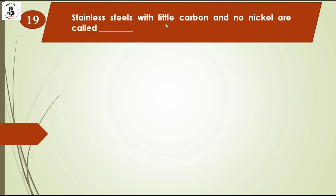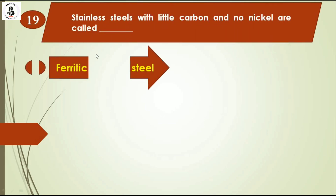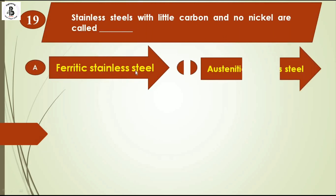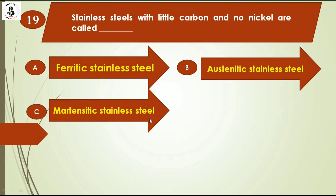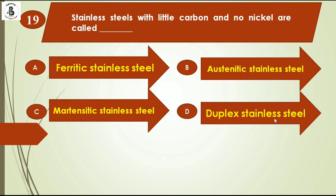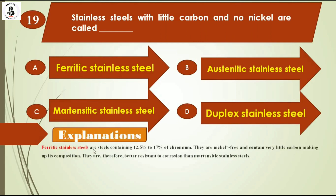Stainless steels with little carbon and no nickel are called: option A Ferritic stainless steel, option B Austenitic stainless steel, option C Martensitic stainless steel, option D Duplex stainless steel. Ferritic stainless steels contain 12.5% to maximum 70% chromium. They are nickel-free and contain very little carbon. They therefore have better resistance to corrosion than martensitic stainless steel. So the right answer is option A, Ferritic stainless steel.